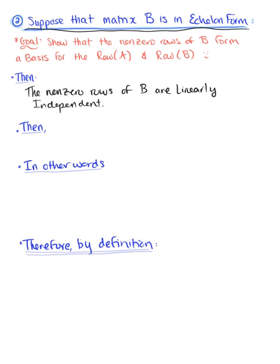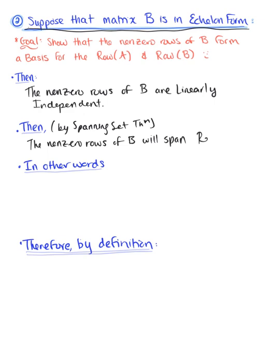Why? This is because no nonzero row is a linear combination of the nonzero rows below it. By the spanning set theorem, the nonzero rows of matrix B will span the row space of matrix B. So the nonzero rows of matrix B are a linearly independent set that spans the row space of matrix B.